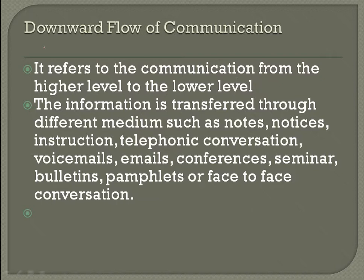Downward flow of communication is when communication passes from higher level to lower level. Information is transferred through different mediums such as notes, notices, instructions, telephonic conversations, voicemails, emails, and conferences. This includes annual reports, confidential reports, performance appraisals, and orientation programs — where information is given from higher management to lower-level employees. It also includes feedback, announcements of company policies, and project communications.